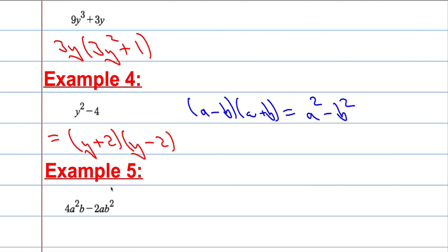Now with example 5, what can I factor out of both? Well let's look at the numbers first of all, what can I factor out? 2. I can factor out a 2 for sure. 2 is the highest common factor of 4 and 2. What about a squared b and ab squared? The highest common factor of those guys is going to be ab. So I'm factoring out 2ab.